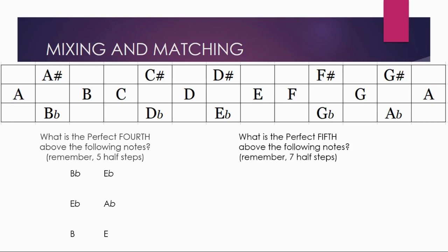Starting on E flat and going four notes up: E, F, G, A — some sort of A. Count five half steps above E flat — we get G sharp or A flat. We pick A flat because the fourth must be some sort of A. Next, starting on B natural: B, C, D, E — some sort of E, and five half steps up from B takes you to E natural. Now let's try perfect fifths with sharps and flats. Starting on F sharp: F, G, A, B, C — some sort of C. Seven half steps above F sharp is C sharp. Starting on E flat: E, F, G, A, B — some sort of B. Count seven half steps up from E flat — and we have B flat. Starting on B natural: B, C, D, E, F — some sort of F. The F that is seven half steps above is F sharp.